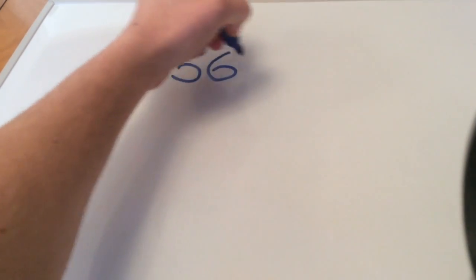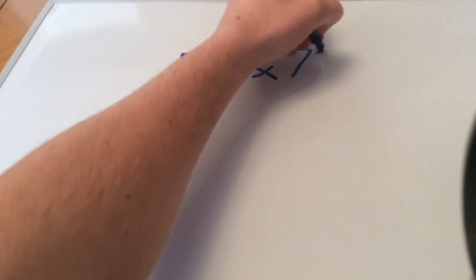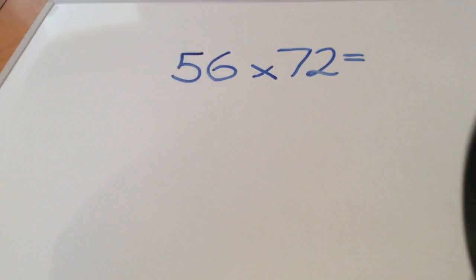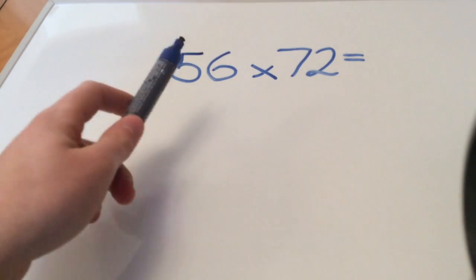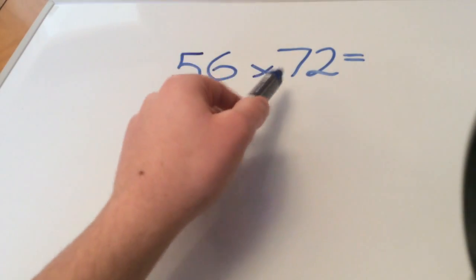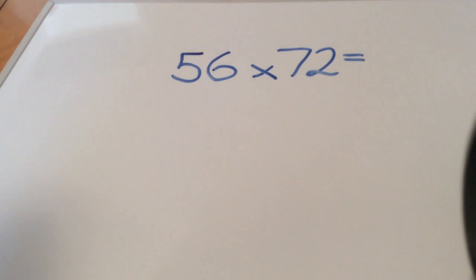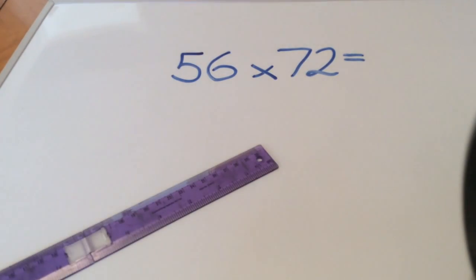Today we're going to look at lattice multiplication. To start, we need a number sentence, so let's go with 56 times 72. The first thing we do is look at the amount of digits in each number. 56 has two digits, 72 has two digits, so we need to make a two by two grid. How do we do that? We need a ruler, of course.